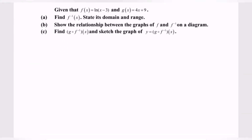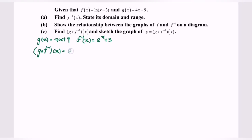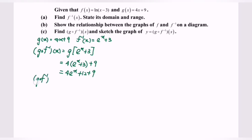Part c: find g∘f inverse(x), then sketch its graph. g(x) equals 4x plus 9, and f inverse(x) equals e to the power of x plus 3. So g∘f inverse(x) equals g(e to the power of x plus 3), which gives 4 times (e to the power of x plus 3) plus 9, equaling 4e to the power of x plus 12 plus 9. Therefore g∘f inverse(x) equals 4e to the power of x plus 21.